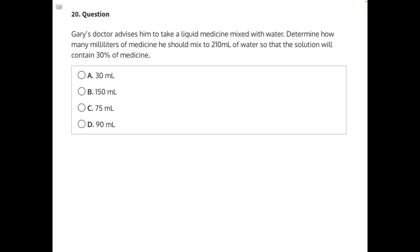Let's start by figuring out what percentage of the solution is water. If 30% is medicine, and water and medicine are the only two ingredients, we can subtract 30 from 100 to find what we're looking for. Water is 70% of the mixture. So now we can set up a proportional ratio.